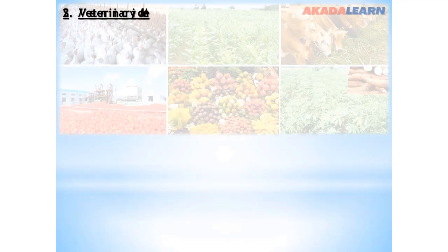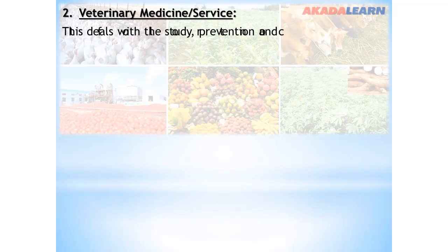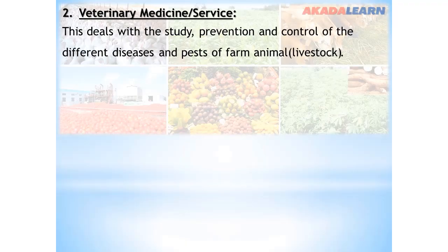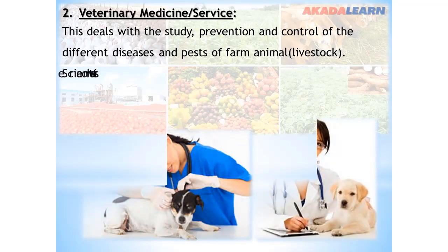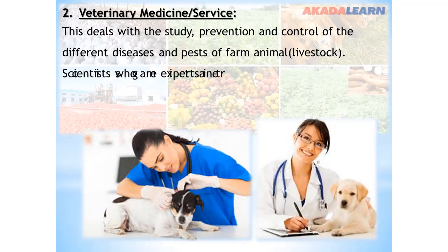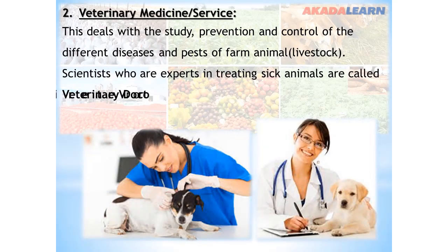The next branch is veterinary medicine or veterinary service. This deals with the study, prevention, and control of different diseases and pests of farm animals — that is, the livestock. Scientists who are expert in treating sick animals are called veterinary doctors or veterinarians.